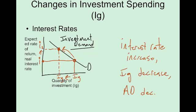Interest rates: we already talked about how interest rates affect investment spending. We assume that businesses, for most of their investment spending purchases, need to get a loan. So the price of that loan — the interest rate — plays a big part in their decision. On this graph, real interest rate is on the y-axis and quantity of investment spending is on the x-axis. It shows an inverse relationship: the higher the interest rate, the less investment spending will go on, because businesses don't like high interest rate loans.